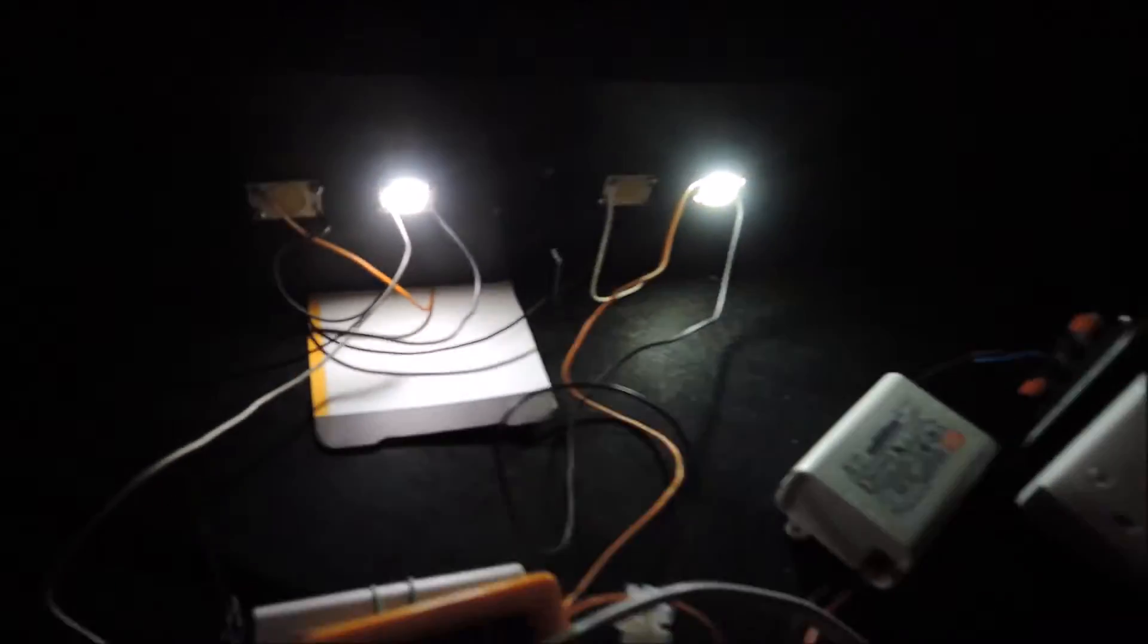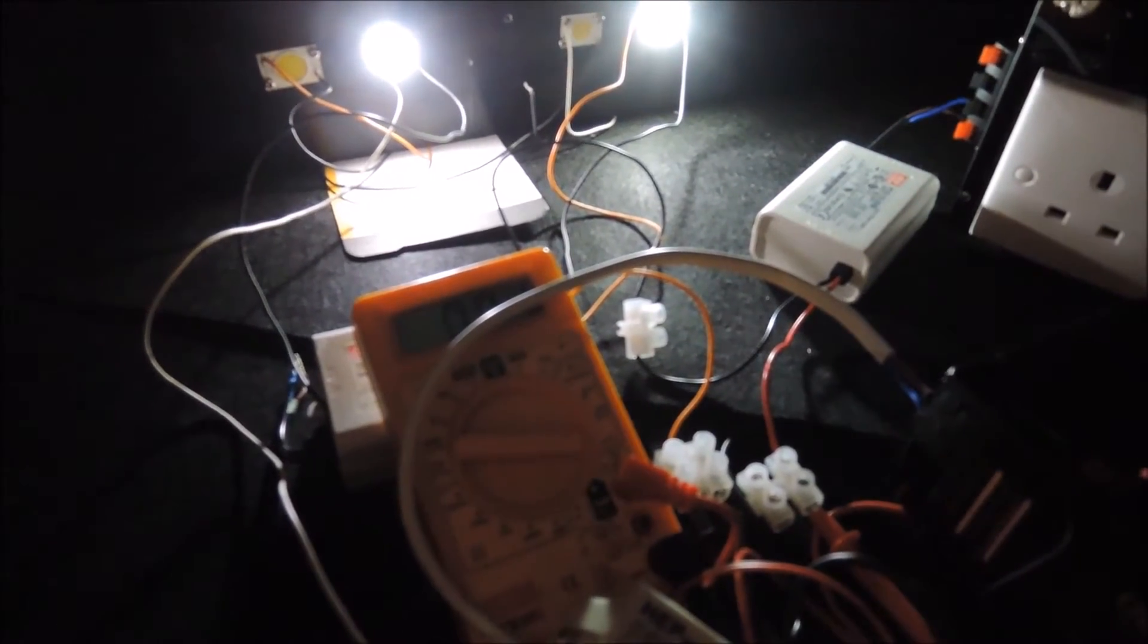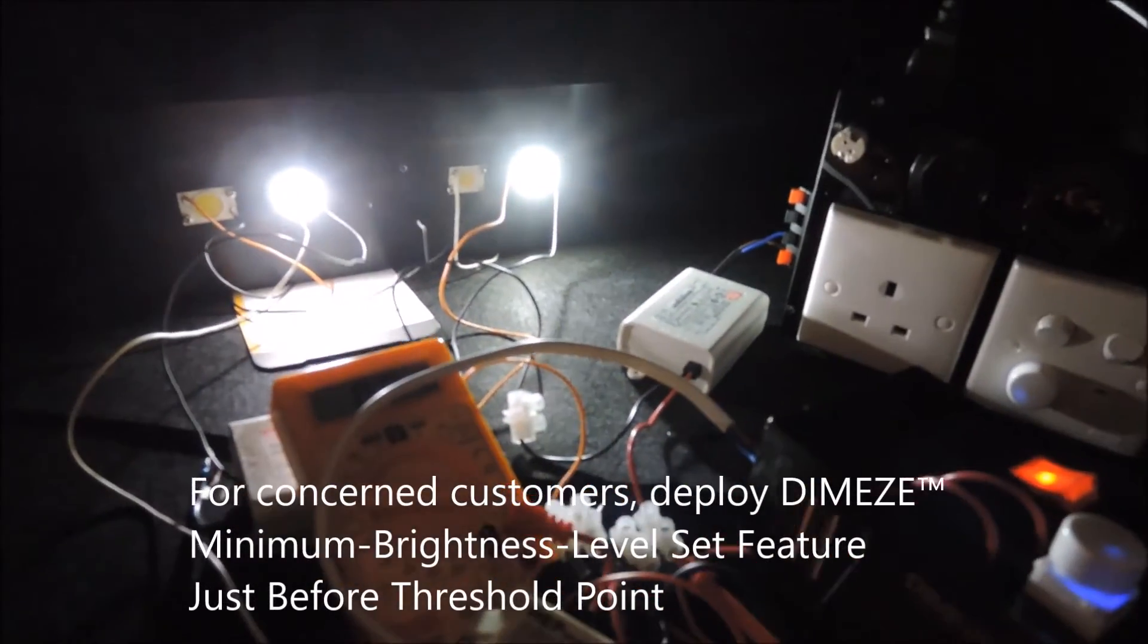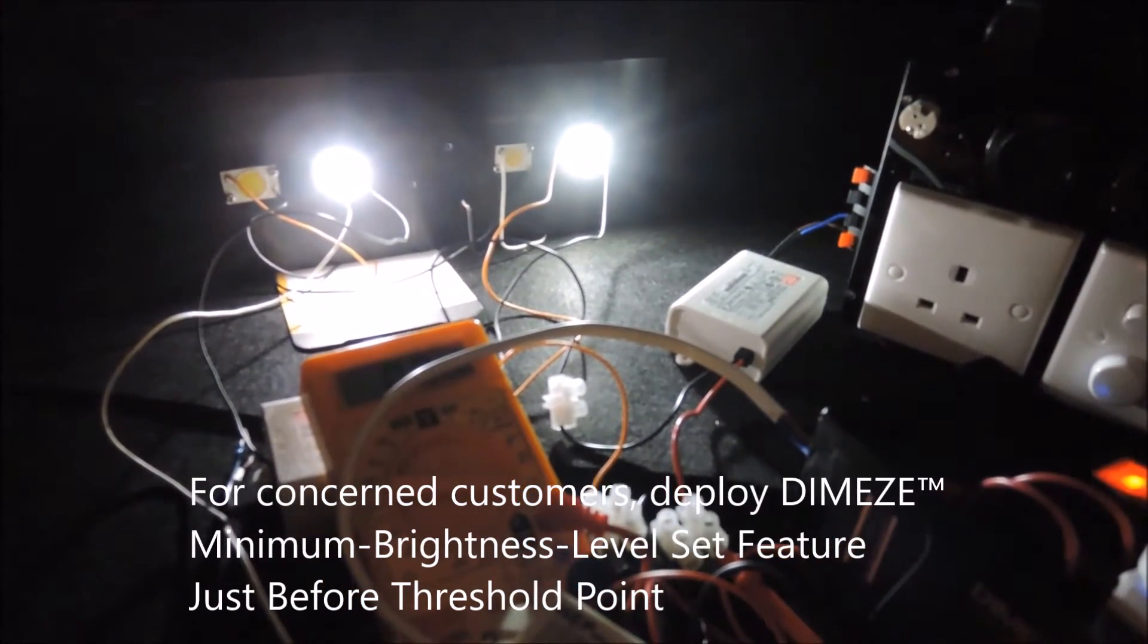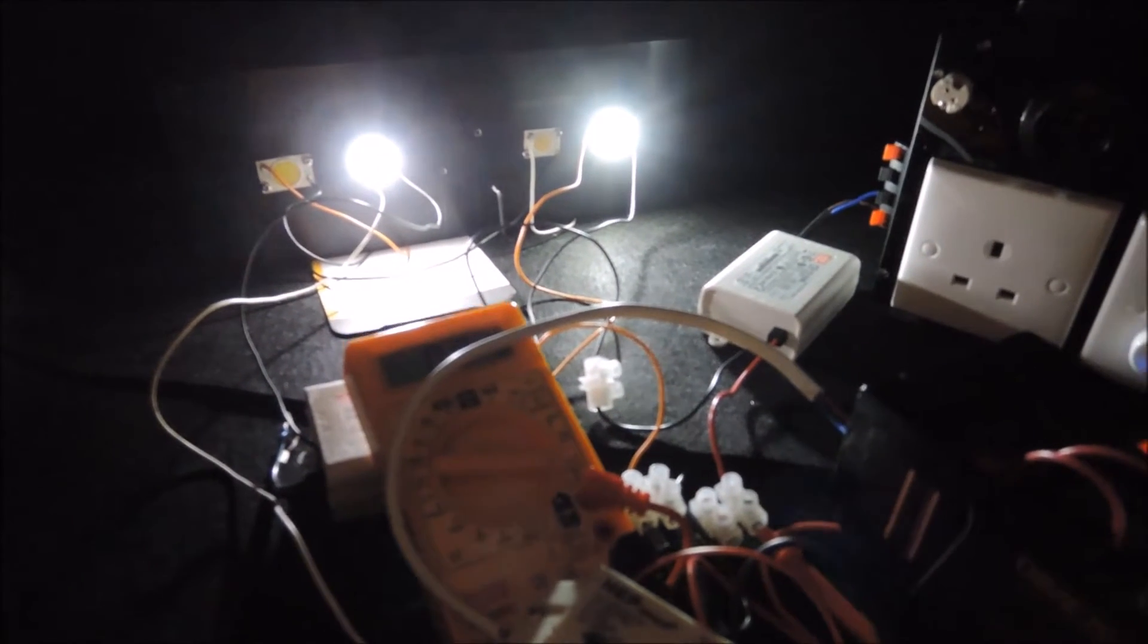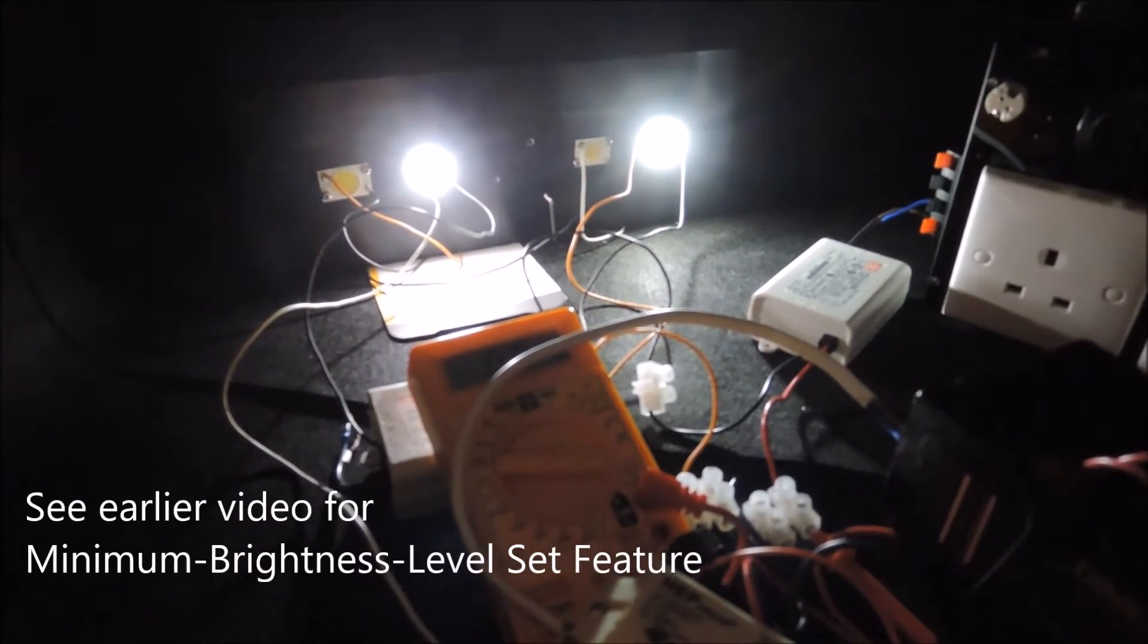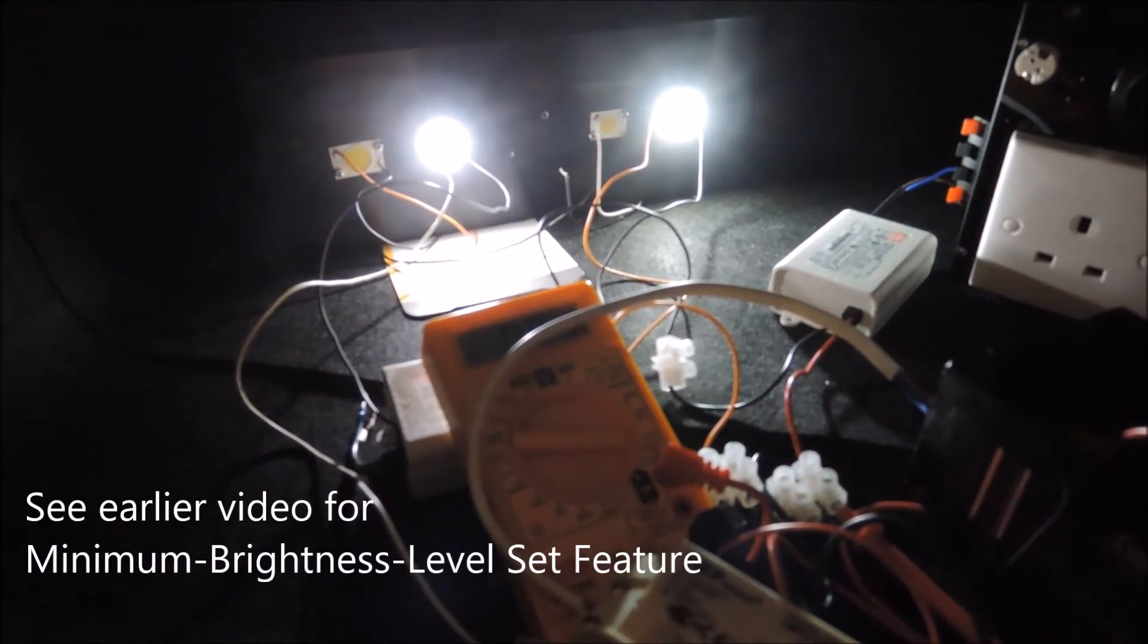So you can see the light output is not as stable as the other. Now if that's a concern in the application, we would suggest to use our minimum brightness level feature to set the brightness level above the flicker point with the HEP driver to avoid undesired effect. Please check our other earlier video for this feature setting.